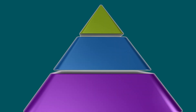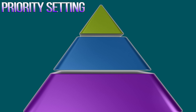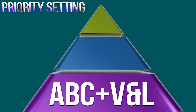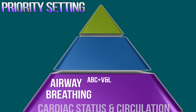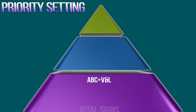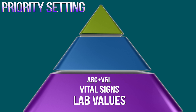Rosalinda Alfaro in 2017 suggests that there are three levels of priority setting. The very first one includes the acronym ABC plus V and L. That stands for airway, breathing, cardiac status and circulation. The V and the L are vital signs and lab values that could be life threatening.